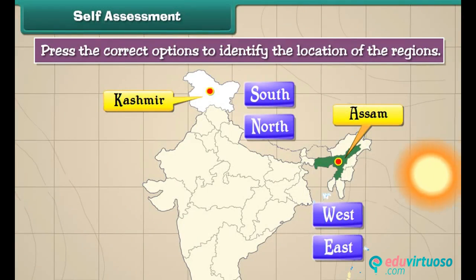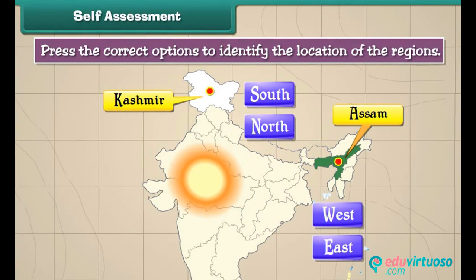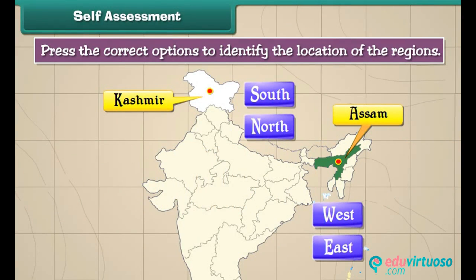Self-assessment: Here is a map of India on your screen. You can see some regions on the map blinking. Press the correct options to identify the location of the regions.